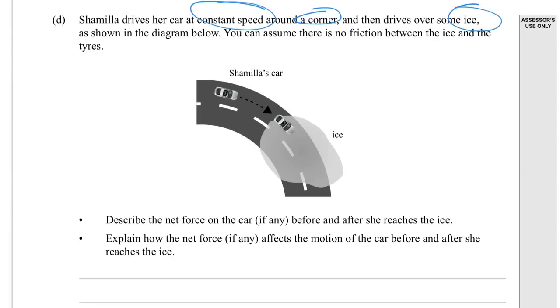Describe the net force on the car, if any, before and after she reaches the ice. Before, this is just a description, not an explanation. So you've got a centripetal force which is greater than zero, unbalanced. So the net force is equal to the centripetal force before the ice, and that's causing the circular motion.